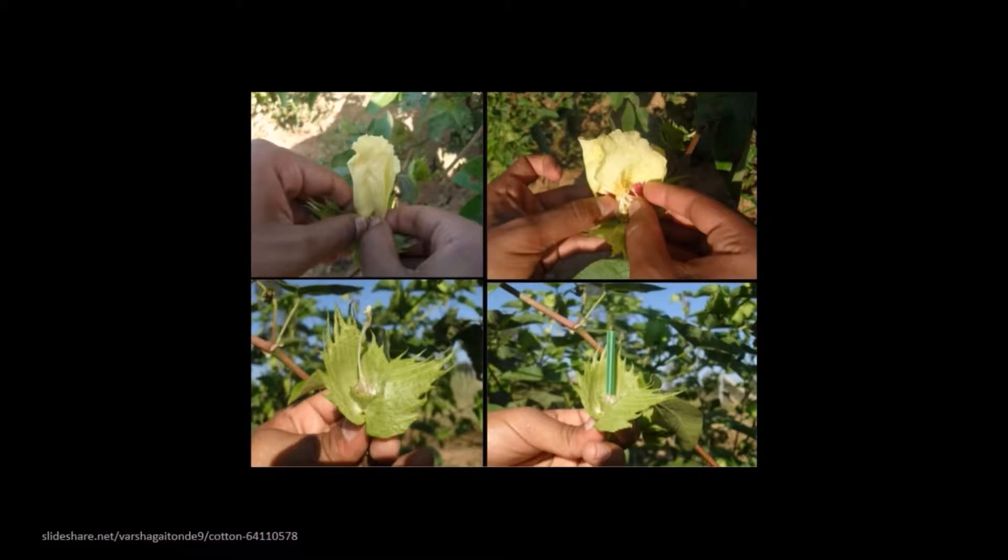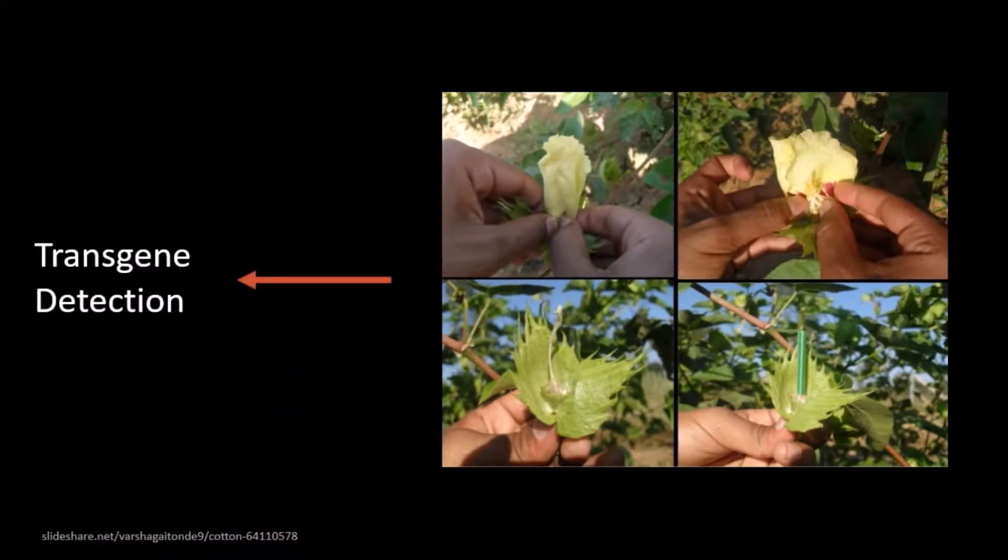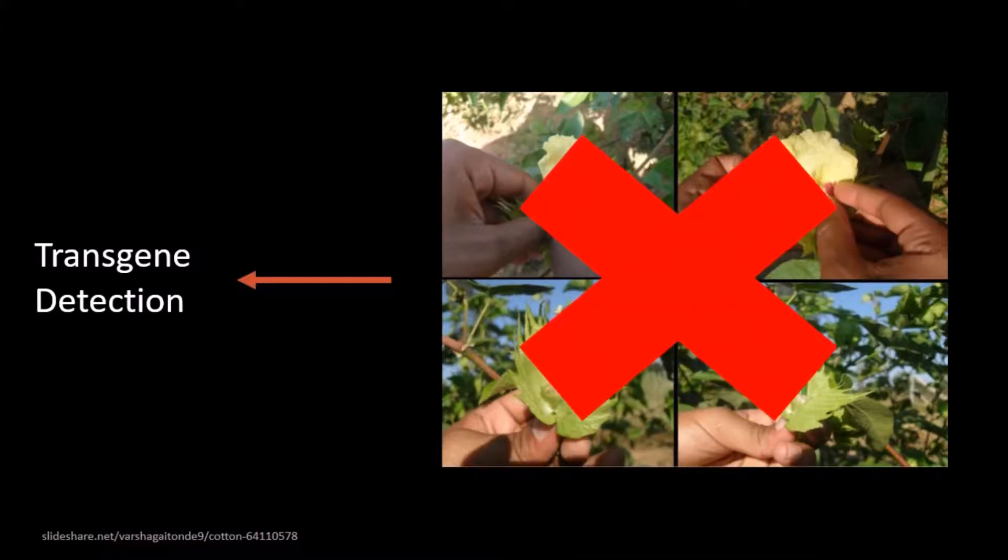This procedure is usually done before making any new crosses between plants. If any plant contains any transgene not patented by the breeder, it is immediately eliminated from the plant breeding process.